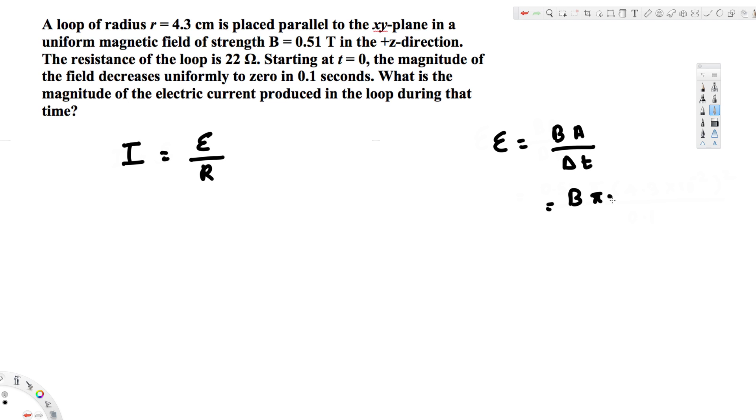B × π × r² / Δt. We have the magnetic field: 0.51 tesla. So this becomes 0.51 × π × (4.3 × 10⁻²)², converting centimeters to meters